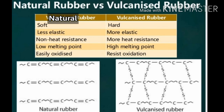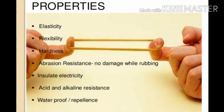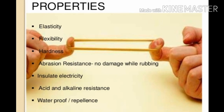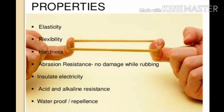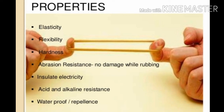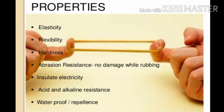Properties of rubber include: elasticity, flexibility, hardness, and abrasion resistance — meaning it will not be damaged while rubbing. It can insulate electricity, acting as an insulator. It also shows acid and alkaline resistance, meaning it resists both acids and bases. Finally, rubber is waterproof or water-repellent — water will not make it moist. This concludes our discussion of natural rubber; in the next lecture we will discuss polyethylene.